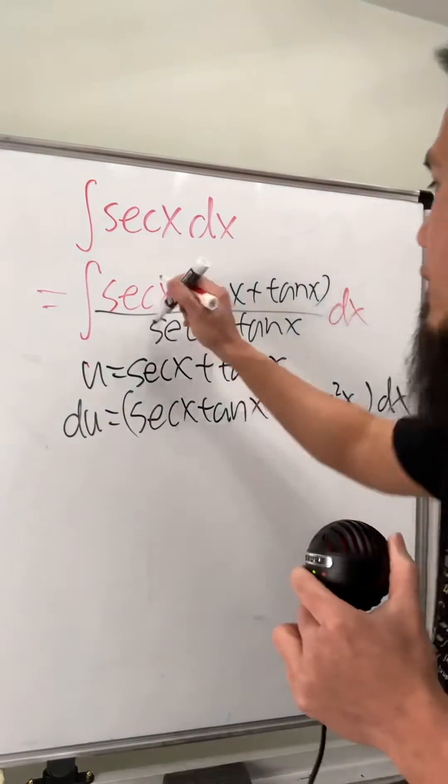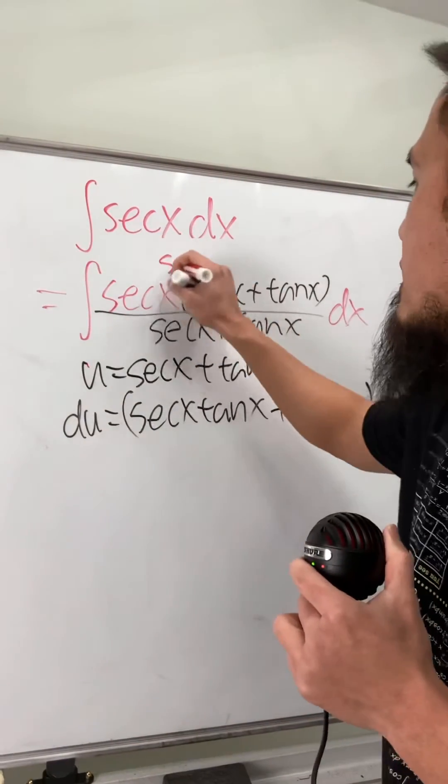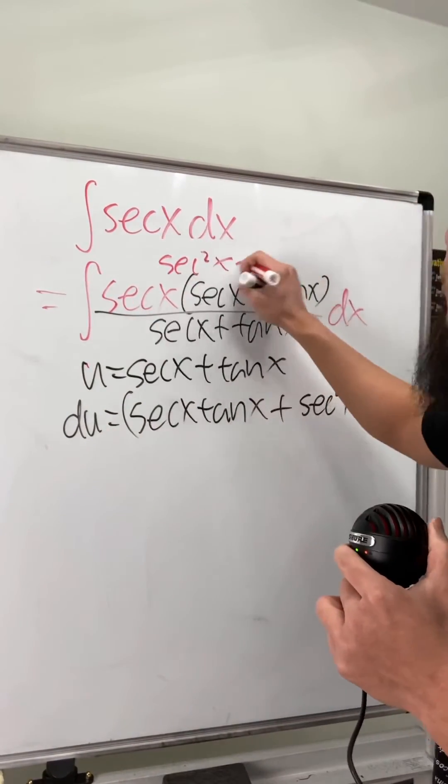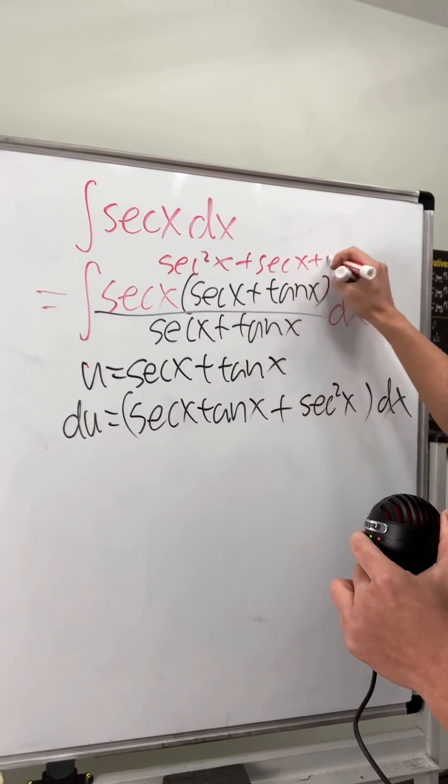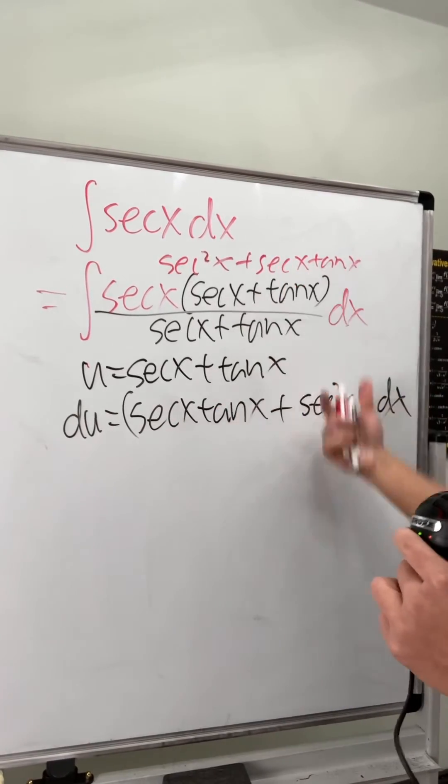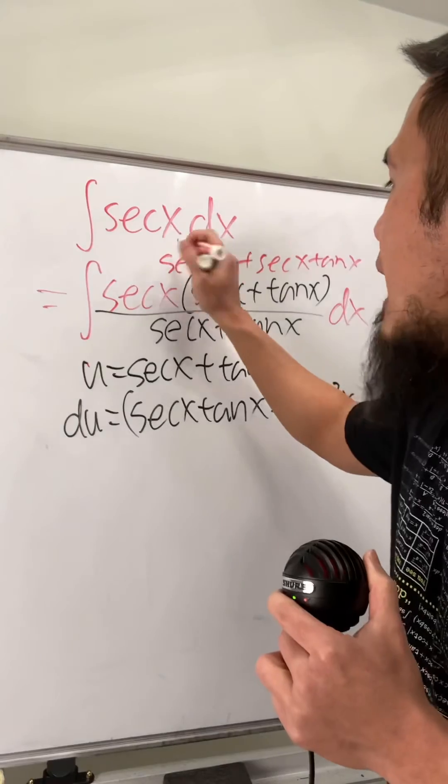And now if you multiply out the top, you will see that secant times secant is secant squared x, and then this times that is of course plus secant x tangent x. And notice this is that, this is that, so altogether on the top right here you actually get precisely the du. So this is actually very nice.